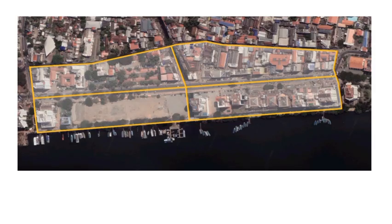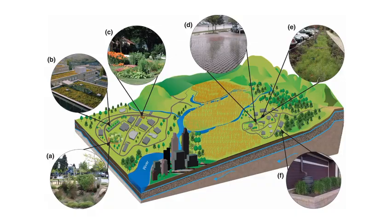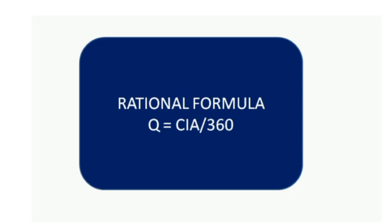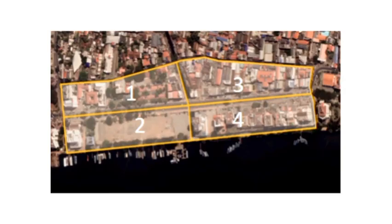We decided to calculate a proper slope for the drains by taking Shanmugam Road stretch as our study area. In order to find the slope of the drain, it is very important to determine the amount of water flowing through the drain — that is, the amount of storm water supposed to flow from the different catchments during a storm. For calculating the design flow, we used the rational formula, which is an empirical relation between rainfall intensity and peak flow widely accepted by hydraulic engineers.